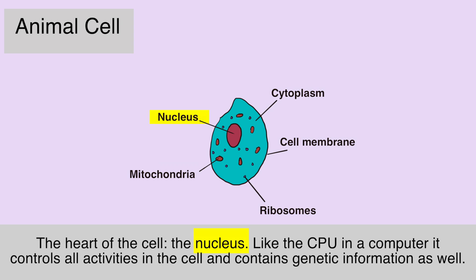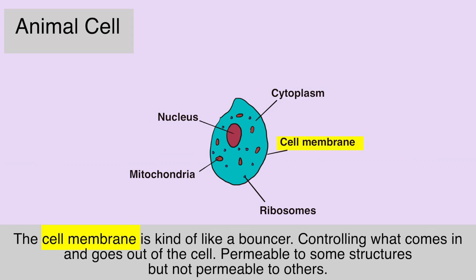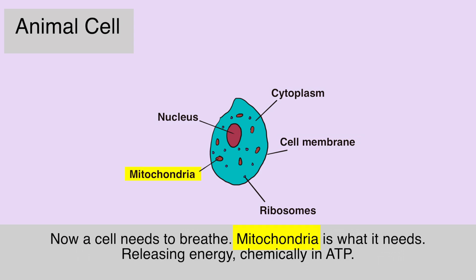The cell membrane is kind of like a bouncer, controlling what comes in and goes out of the cell. Permeable to some structures, but not permeable to others.